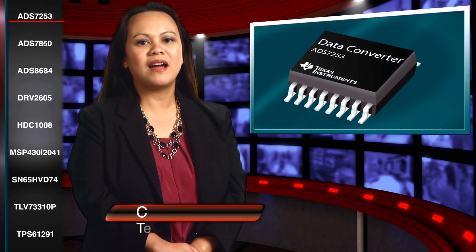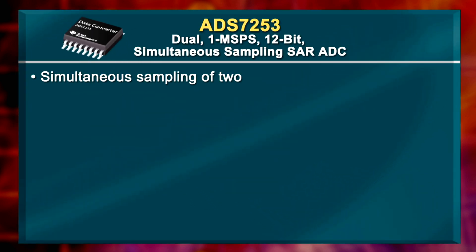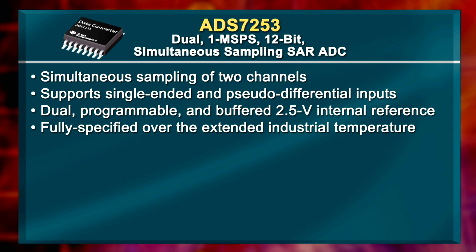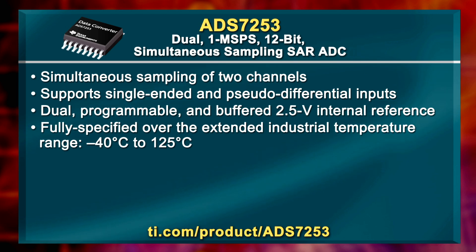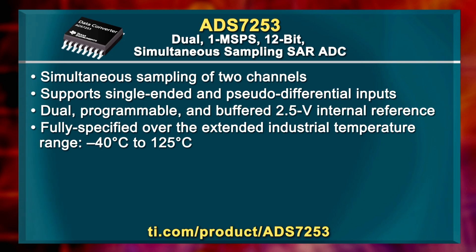We'll start with an IC for applications including motor control, optical networking, and power quality measurement, to name a few. The ADS7253 is a dual, 1-megasample per second, 12-bit simultaneous sampling SAR ADC. It is extremely small and features a very wide temperature range, making it perfect for harsh temperature applications.